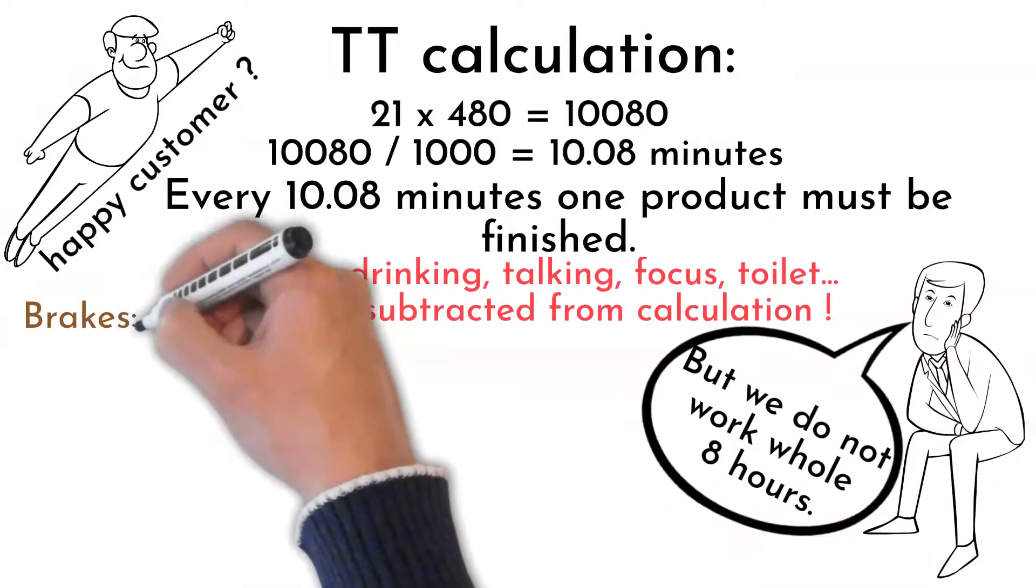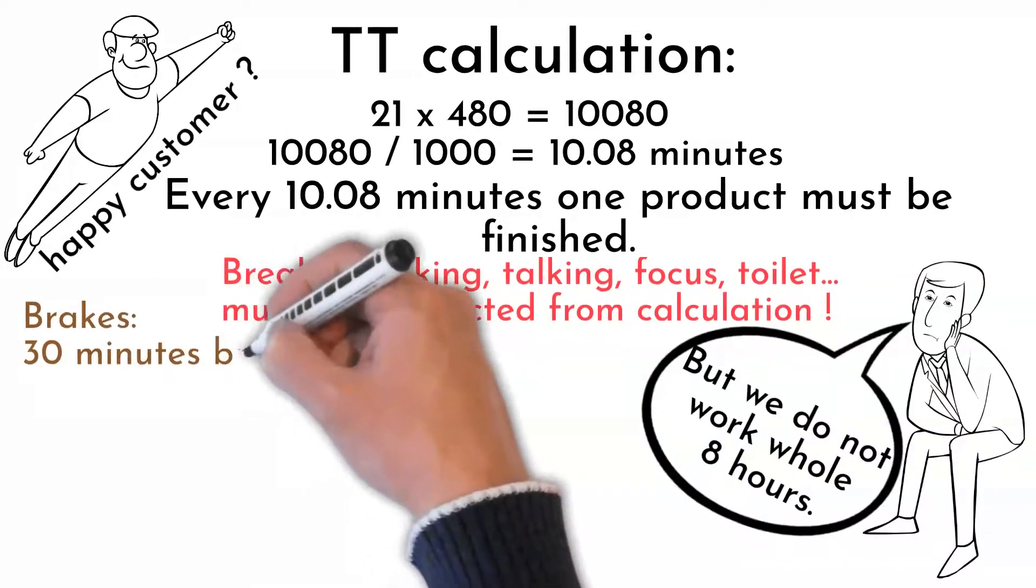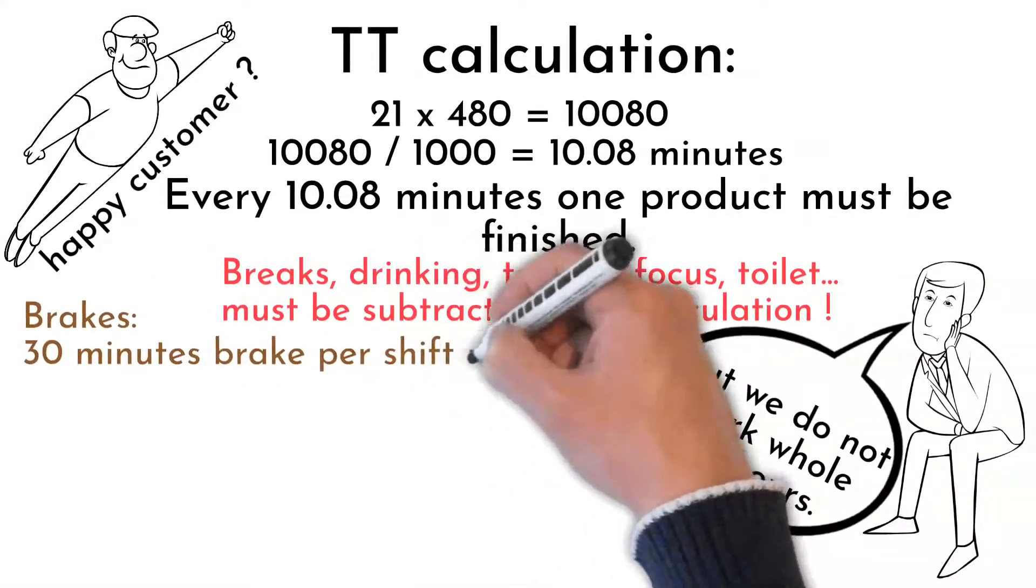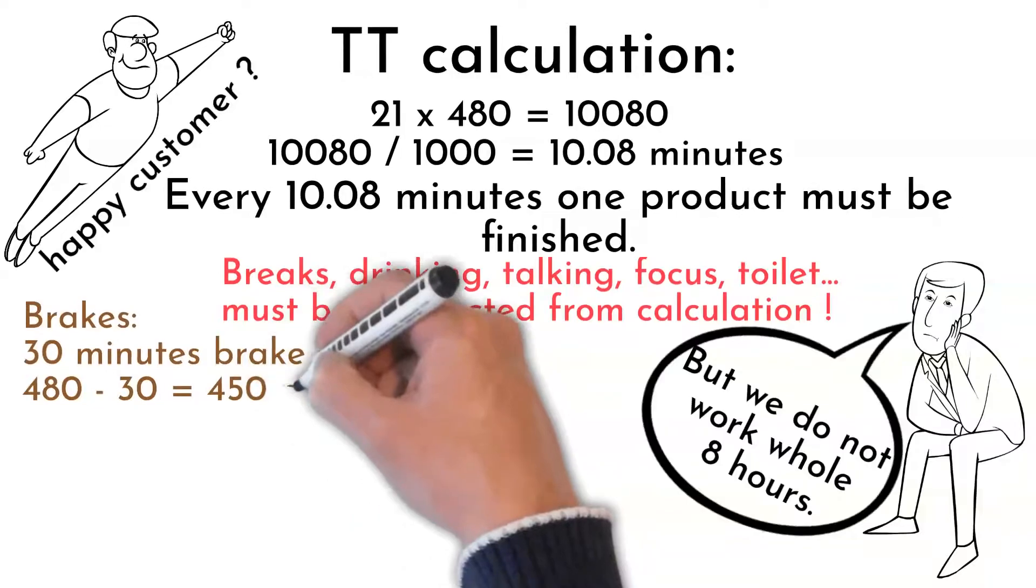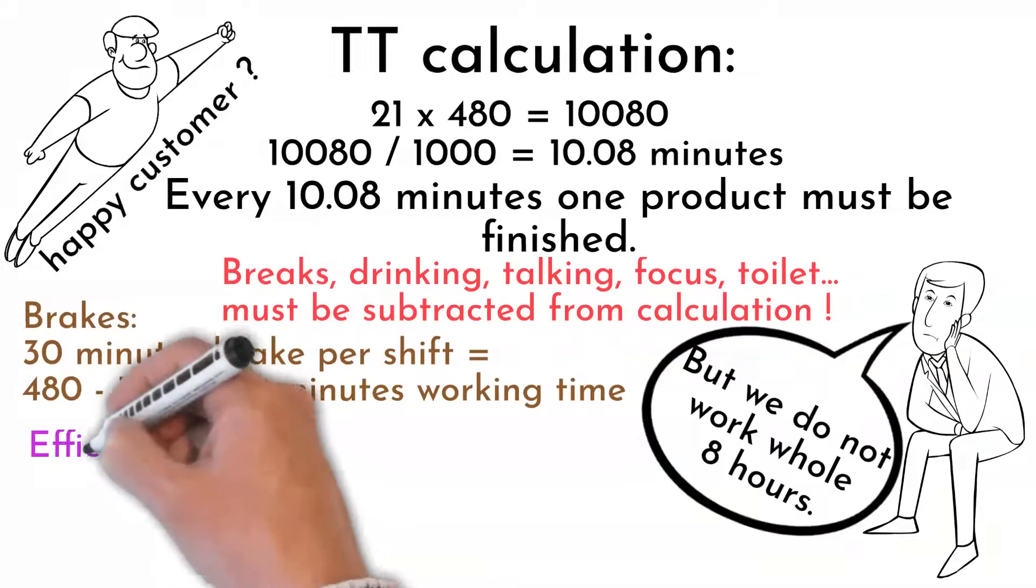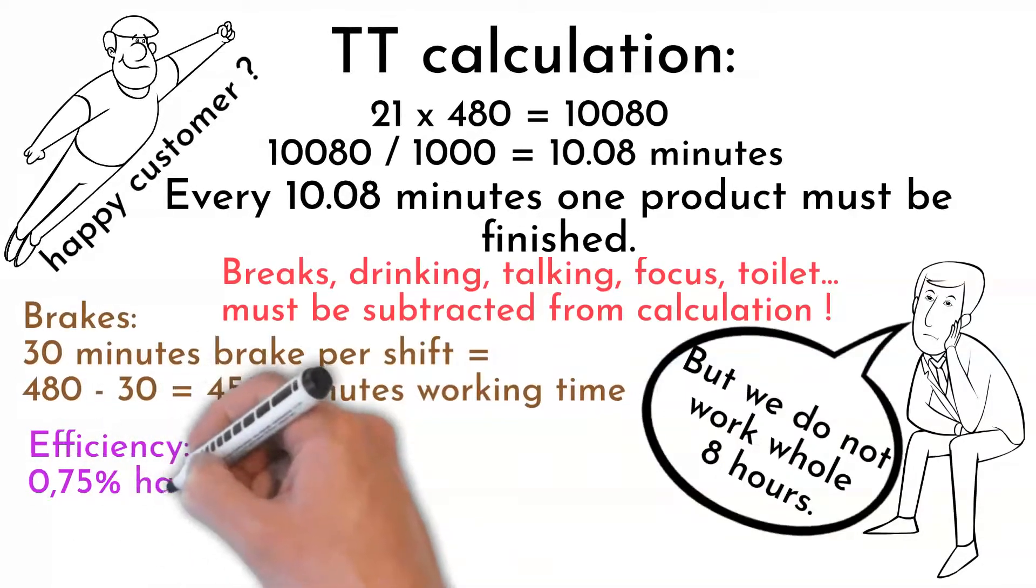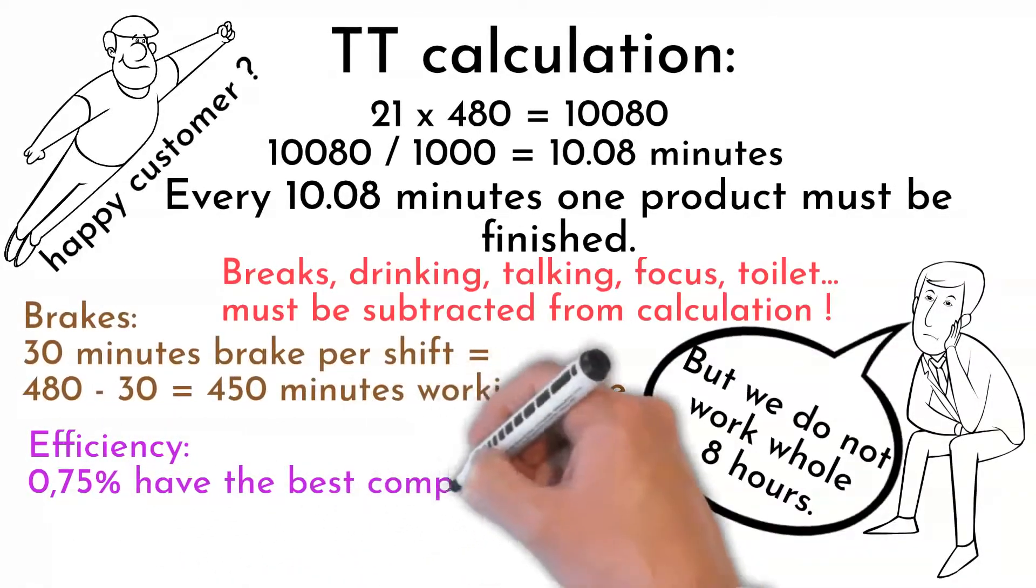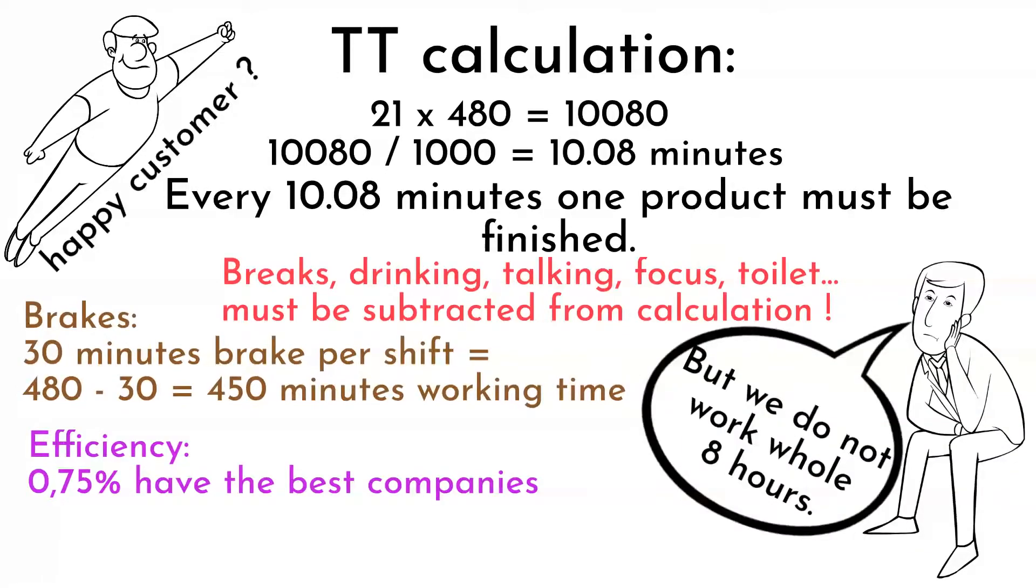First subtract breaks. Let's say there is 30 minutes break in the shift. 480 minus breaks equals 480 minus 30 equals 450 minutes. The best companies are reaching 75% efficiency for human operations. Efficiency can be incorporated by multiplication of 0.75 number.